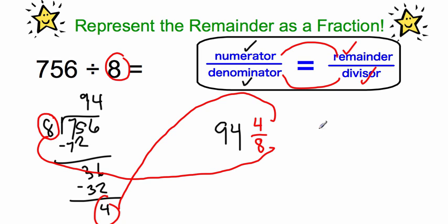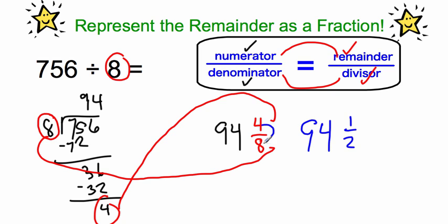There is one other way we could write this. The fraction 4 eighths is the same as 1 half, because 4 is half of 8. So we could also write this answer as 94 and 1 half.